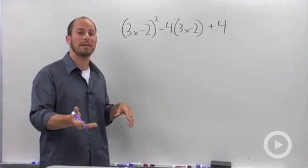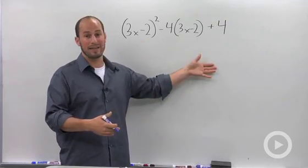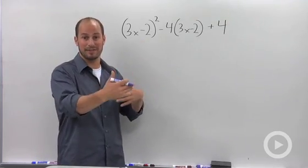The most common approach to doing a problem like this, at least that students want to do, is to foil everything out, combine like terms, and then factor it down again.